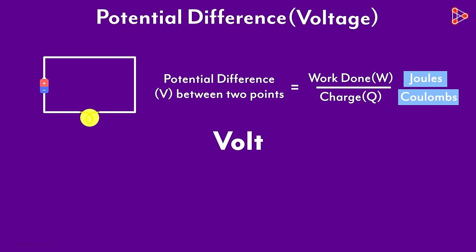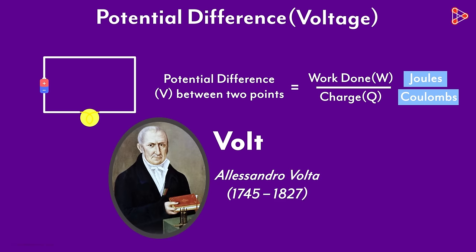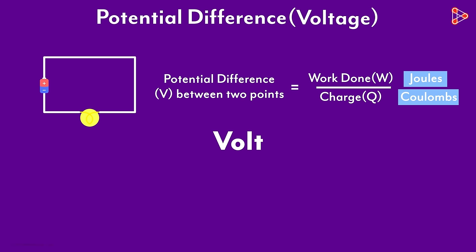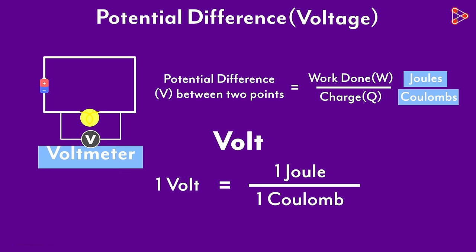It's Volt, named after Alessandro Volta, an Italian physicist. So how would we define Volt in a current carrying conductor? It is the potential difference between any two points when one joule of work is done to move a charge of one coulomb from one point to another. The potential difference is measured by an instrument called a voltmeter. It's measured in parallel across the points between which the potential difference is to be measured.